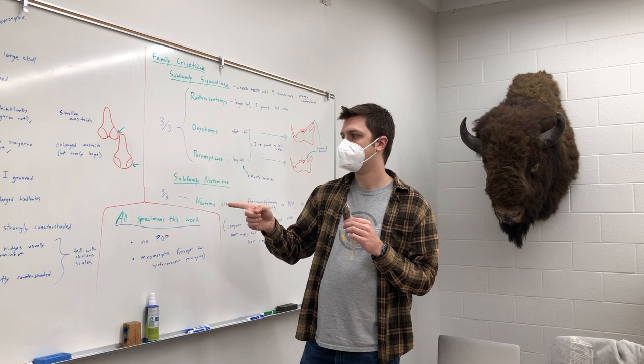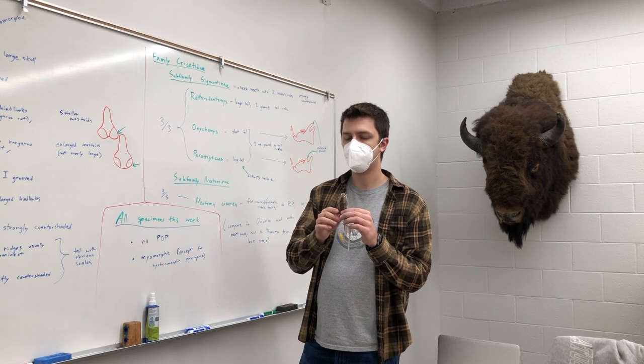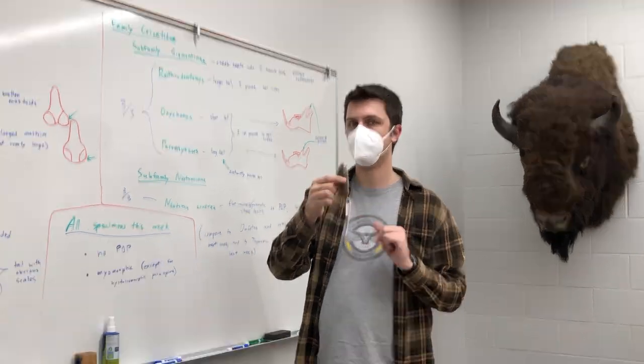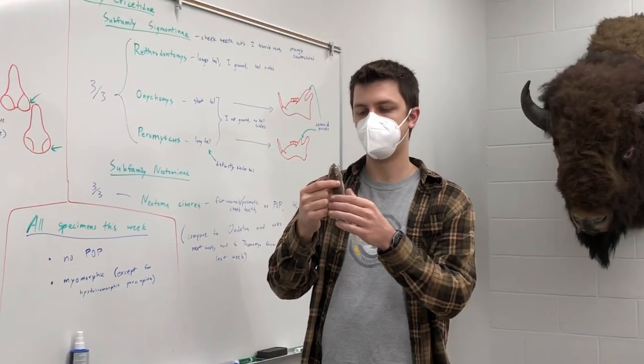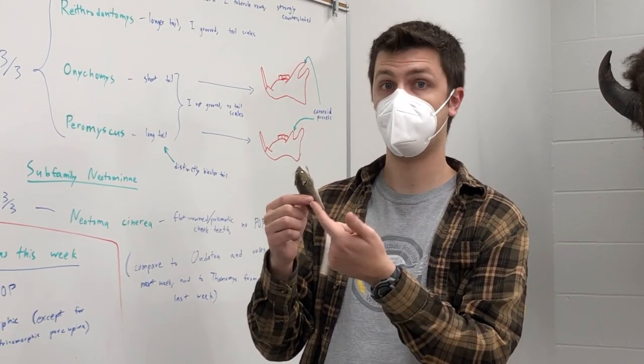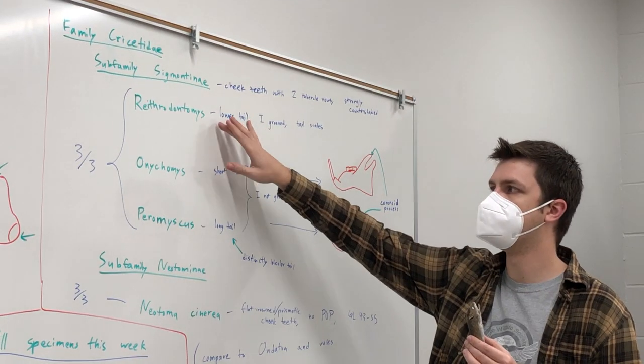Is it a jumping mouse? Does it have a super, super long tail with tail scales? No. Is this a house mouse? Does it have weak countershading? Does it have strong countershading? Okay, so then that leaves it as one of these three.